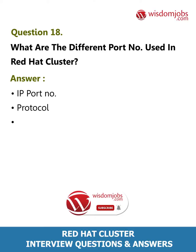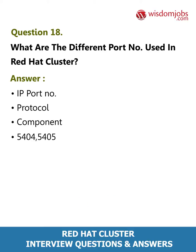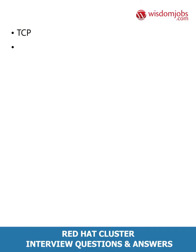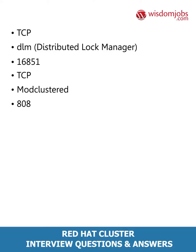Question 18: What are the different port numbers used in Red Hat Cluster? Answer: Port 5404/5405 UDP — Corosync/CMAN; Port 11111 TCP — Richie; Port 21064 TCP — DLM (Distributed Lock Manager); Port 16851 TCP — mod_clisted; Port 8084 TCP — Lucy; Ports 4196/4197 TCP — RG Manager.